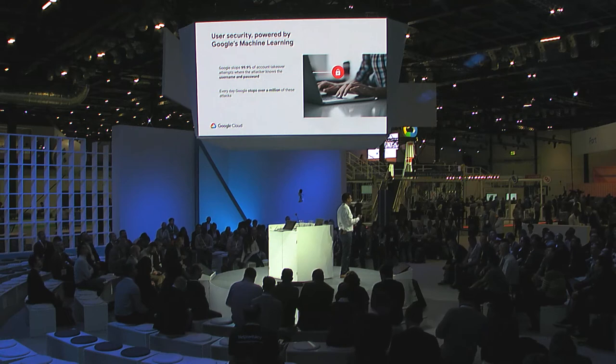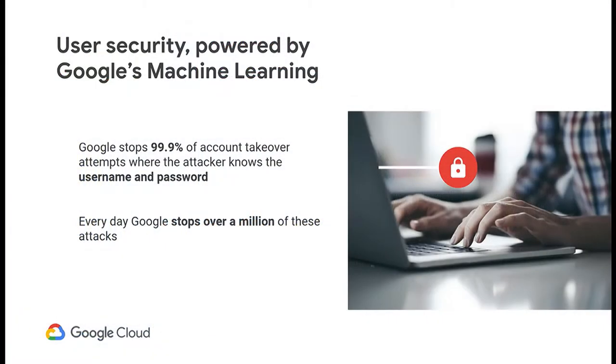Good security prevents attacks before they actually happen. Because of Google's scale and the number of access events we see across our applications with over a billion users, we're able to see a lot of signals hackers are trying to use and apply machine learning to protect all Google users. In fact, even if a hacker knows your username and password, 99.9% of the time Google is able to prevent that account takeover. We prevent over 100 million takeover attempts in a single day.